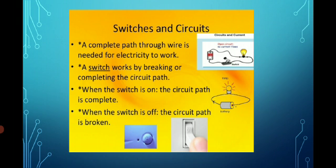The switch works by breaking or completing the circuit path. When the switch is turned on, the circuit gets a complete path and the electrical appliance starts working. When we turn off the switch, the path is broken and current stops, so the electrical appliance does not work. This is how switches and circuits function.